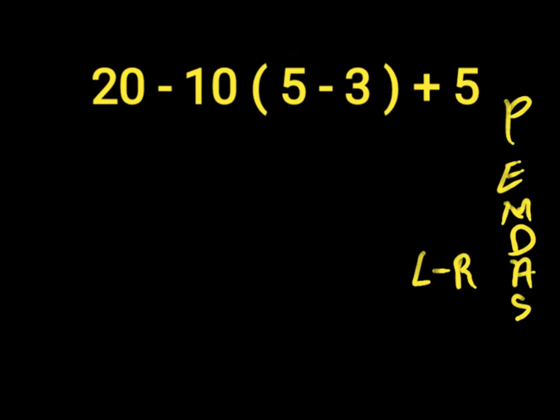First of all, we solve our parenthesis which is 5 minus 3. 5 minus 3 will give us 2. Then we have 20 minus 10 times 2 plus 5. So first of all we solve our multiplication because it comes first before subtraction and addition. Remember, if a number is close to the parenthesis, note that there is a multiplication sign in between. So 10 times 2 will give us 20.